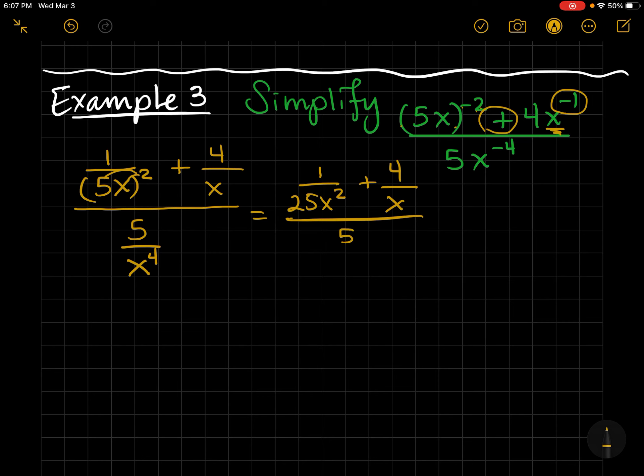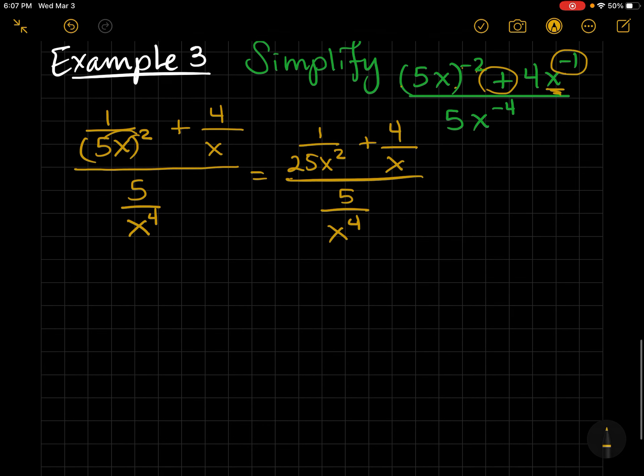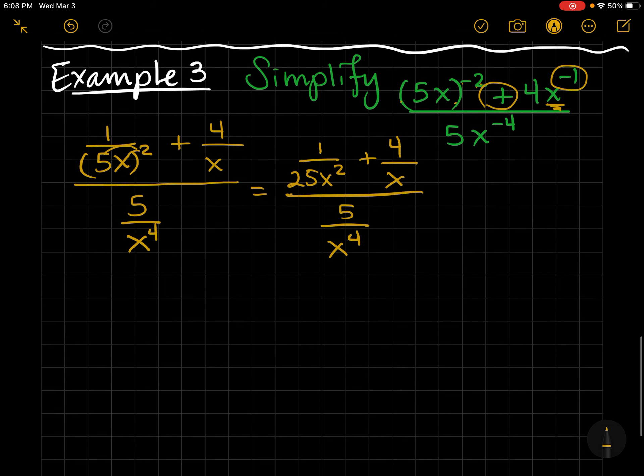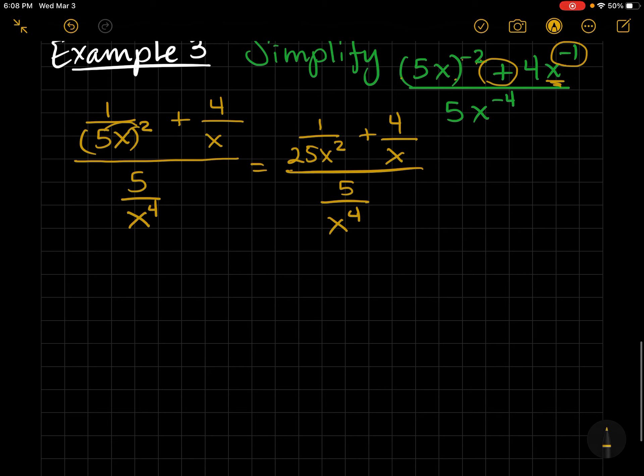So, now I need to add those fractions before I proceed. So, before I can add, I need to get common denominators. Let's see, I think a good common denominator would be 25x squared.